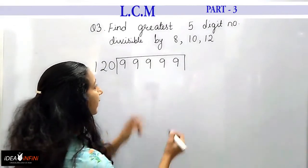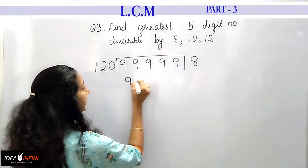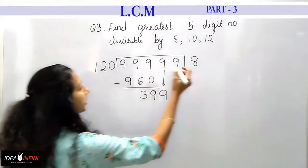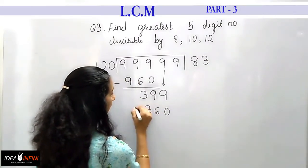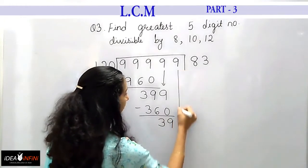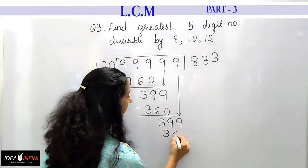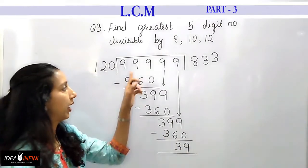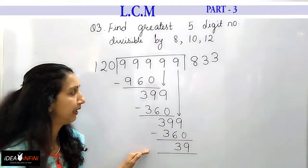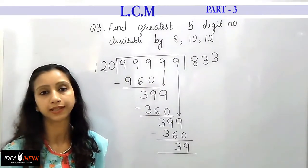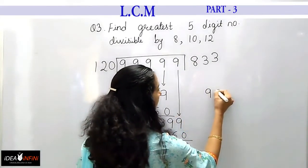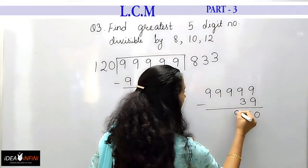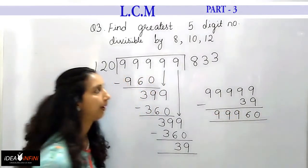Dividing 99999 by 120: 120 × 8 = 960, leaving 39; bringing down gives 399. 120 × 3 = 360, leaving 39; bringing down again gives 399. 120 × 3 = 360, giving a final remainder of 39. I subtract this remainder from 99999 to get the greatest 5-digit number divisible by 8, 10, and 12.